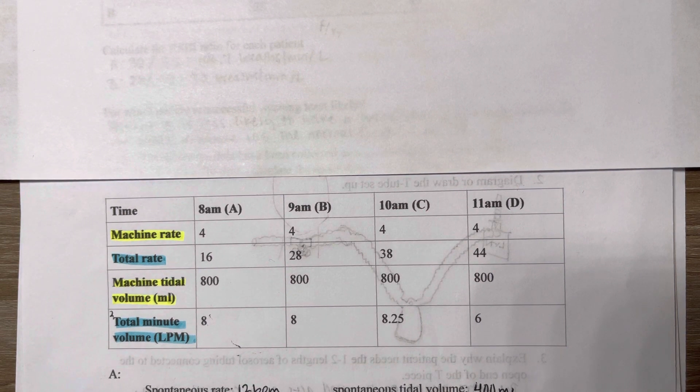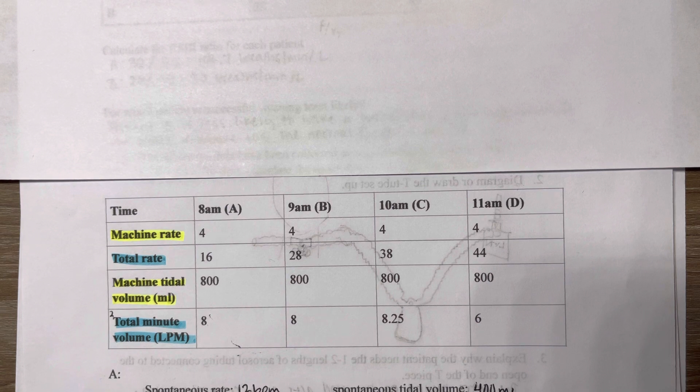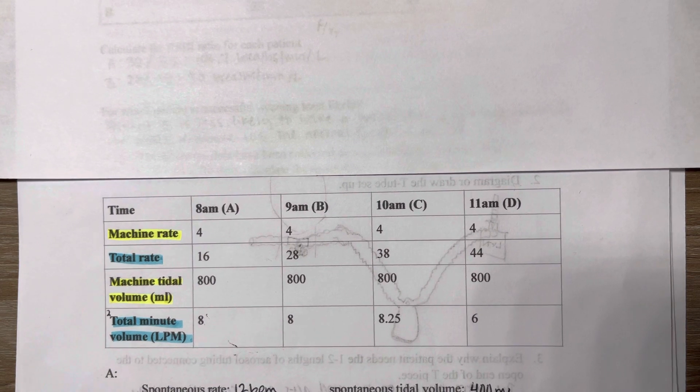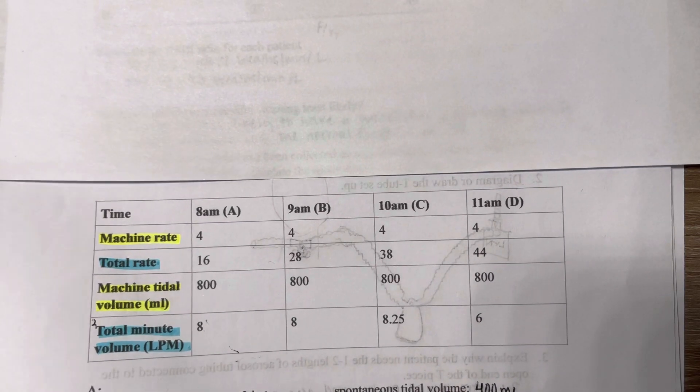We are given some machine rates and tidal volumes and we're also given total rates and minute volume. So this is a lot of information to digest. I'm going to do the calculations separately. I find it easier to organize my information that way. So I'm just going to use a separate sheet of paper.